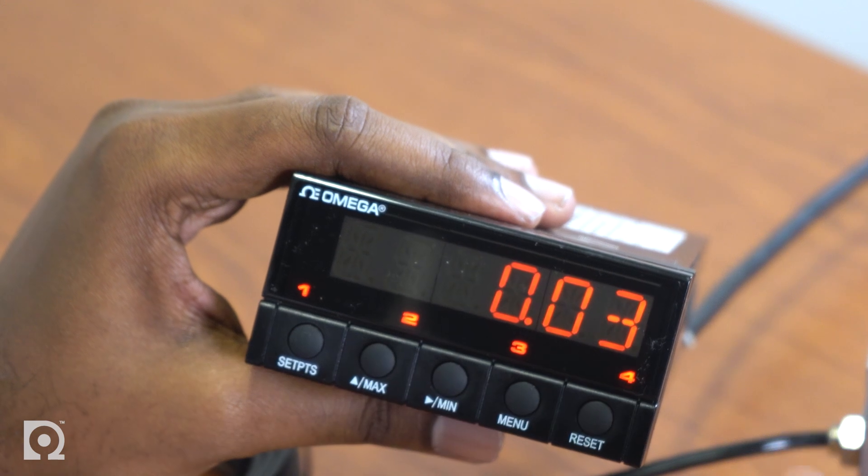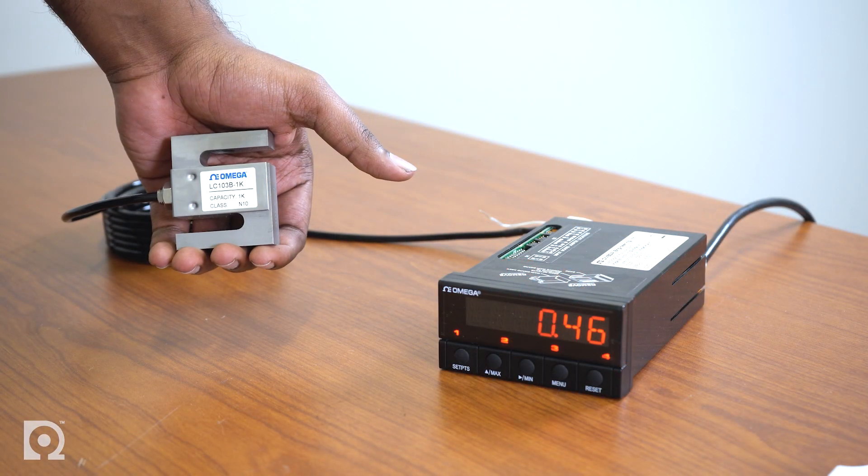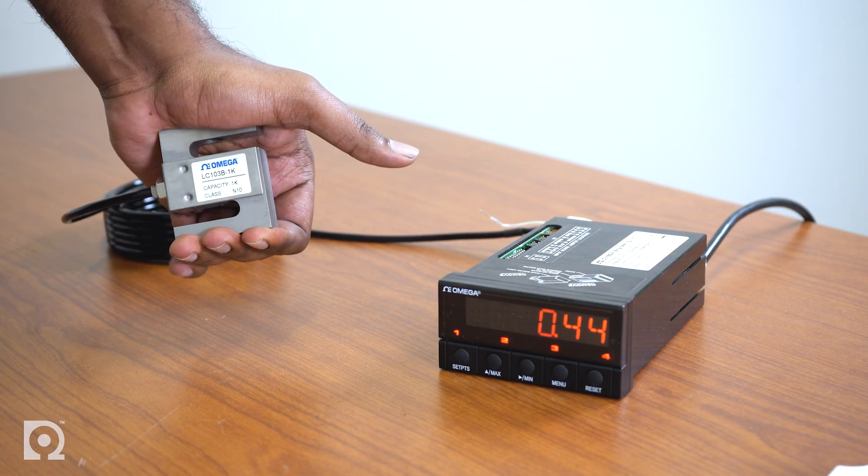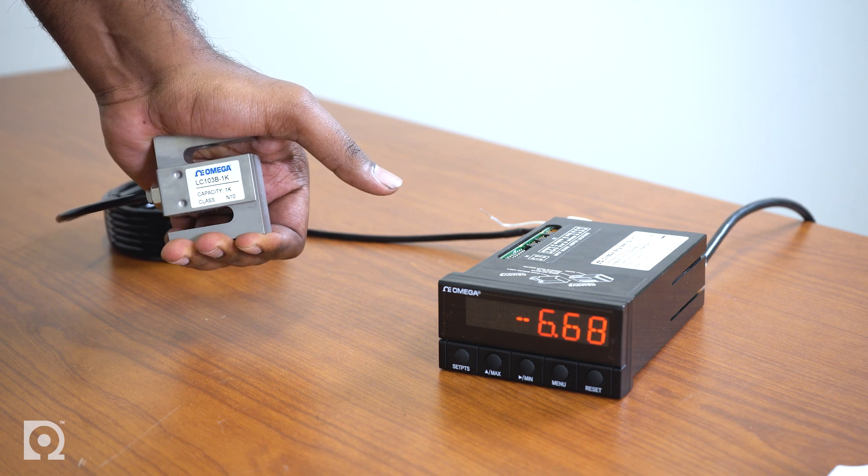And there you have it. We programmed this meter and it reads in pounds force. Now if I manually apply a load on the load cell, you'll see the value of the load cell increasing in pounds force. There you have it. We powered up the meter, connected the load cell to the meter, and configured it to read in pounds force.